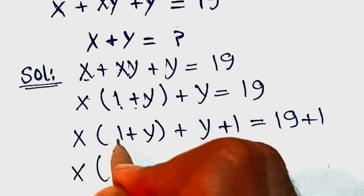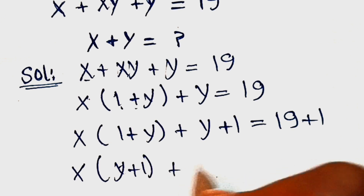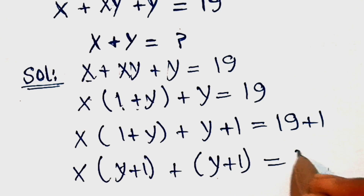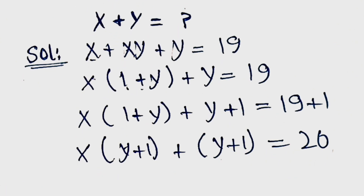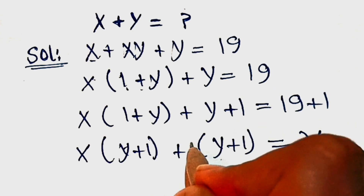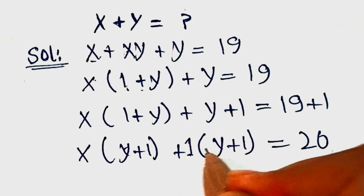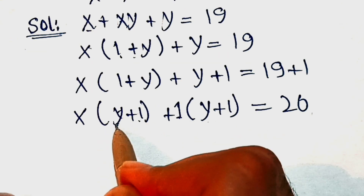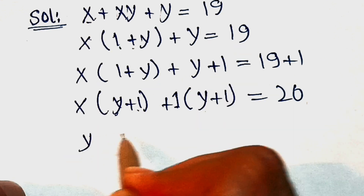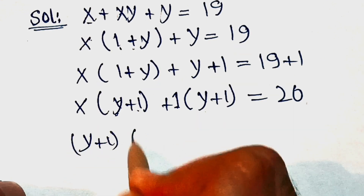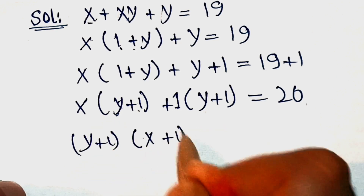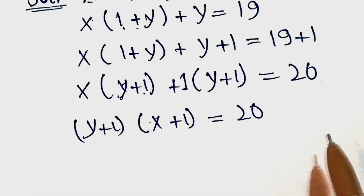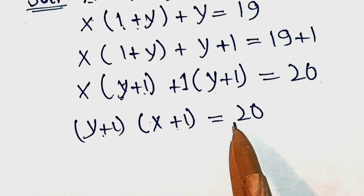We can write this as x times (y plus 1) plus 1 times (y plus 1) equal to 20. Now (y plus 1) is common, so let's take it out. We are left with (y plus 1) times (x plus 1) equal to 20.